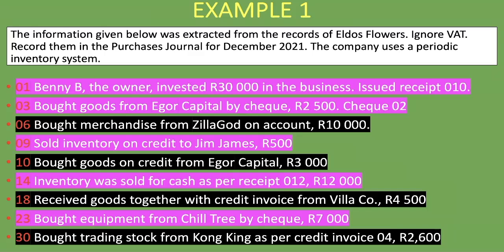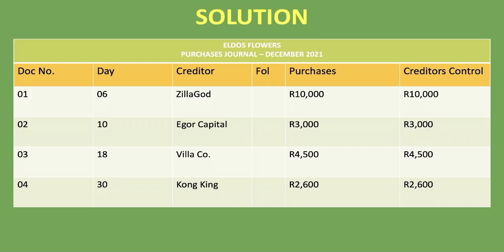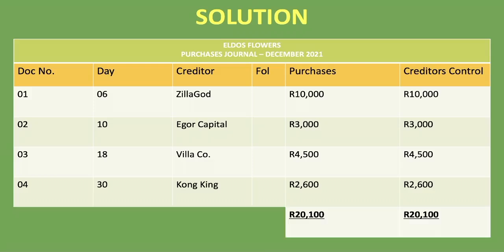Now we total up the purchases column and creditors control column. Since we are ignoring VAT, the totals are the same — 20,100 rand for both columns. That is how you complete the purchases journal. We also provide one-on-one lessons at reasonable rates — visit our website or email us using the links in the description below. Consider subscribing, liking, and sharing this video.